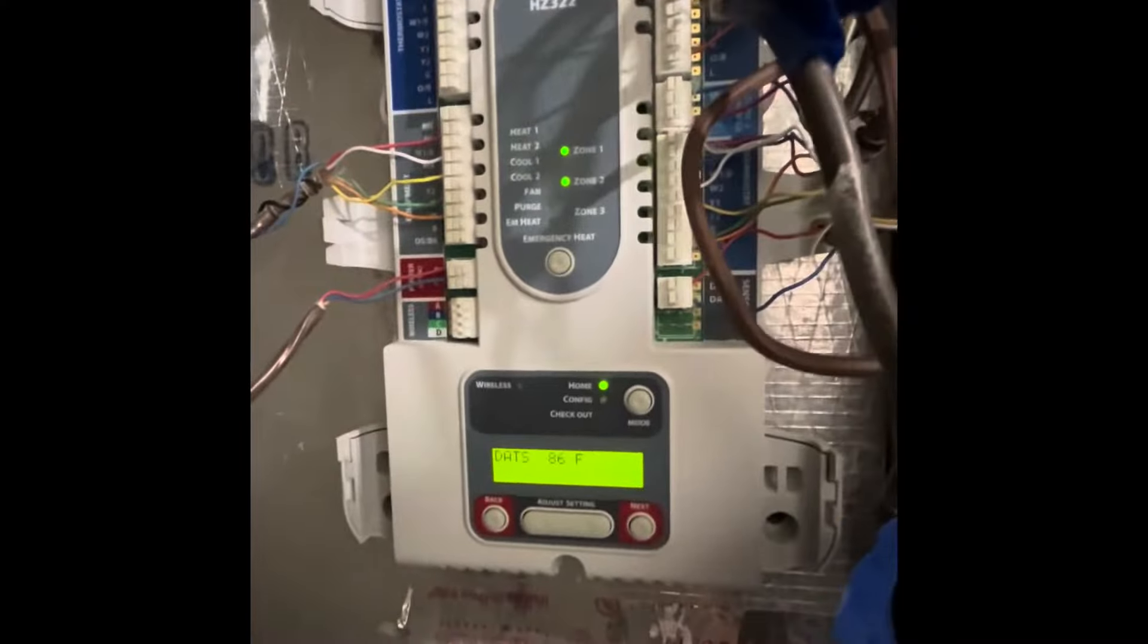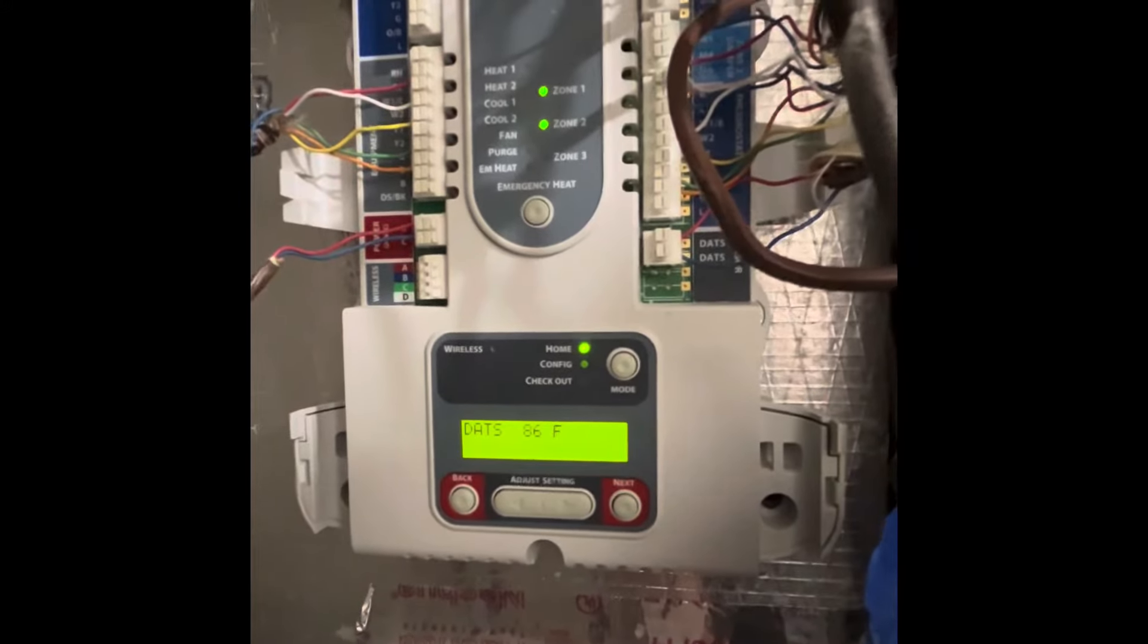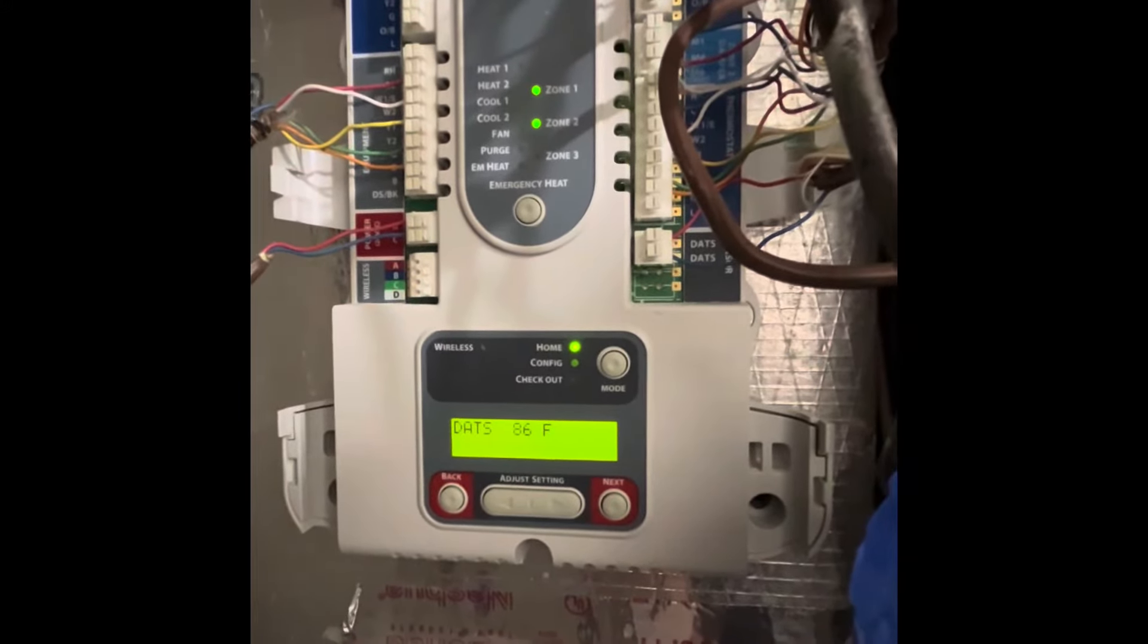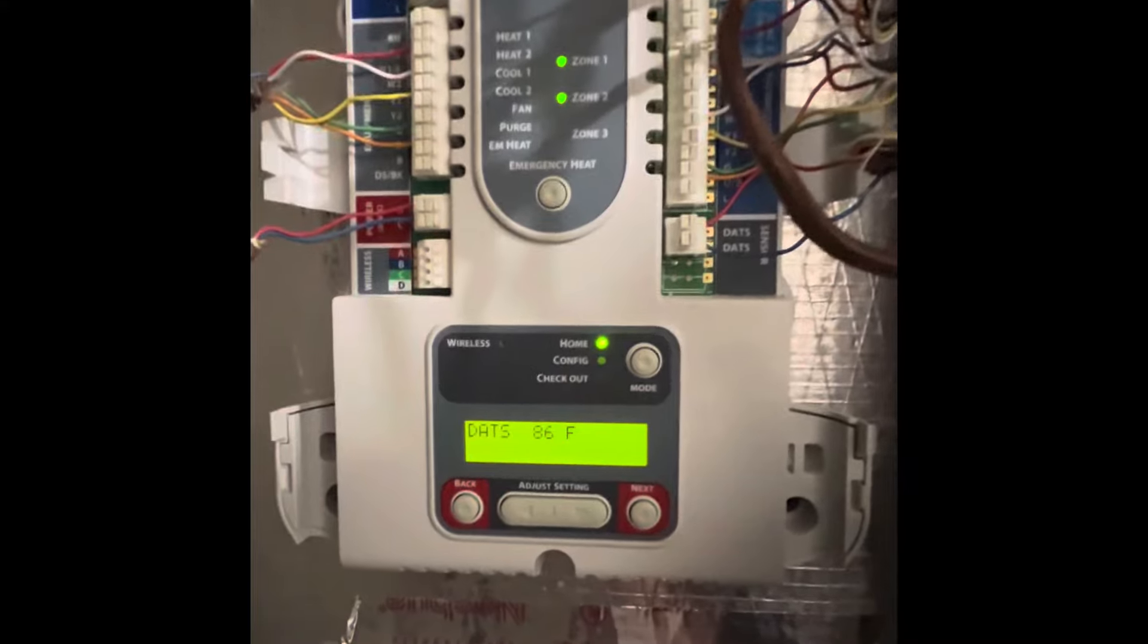So if you ever show up to a job and you see the DATS temperature exceeding 160 to 170 degrees, or if it's below 40, it will time out and will not allow the system to run. So just make sure you check that first. That is the number one problem with these things—is that data sensor.